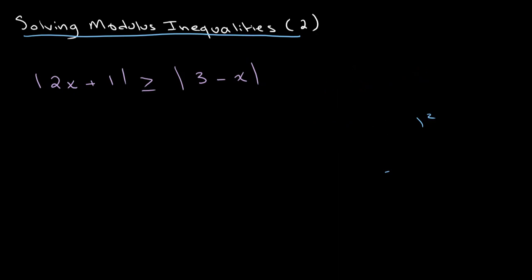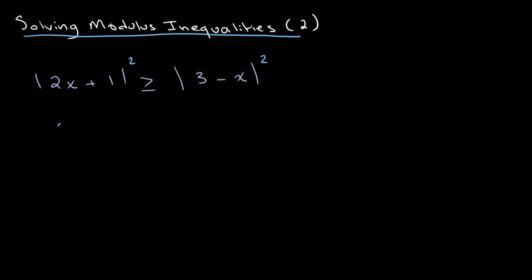When we solve these equations we want to apply that same rule. We will be squaring both sides of our equation in order to get rid of the absolute value signs. So we square the absolute value of 2x plus 1 and the absolute value of 3 minus x, and rewrite this as: 2x plus 1, whole squared, is greater than or equal to 3 minus x, whole squared.